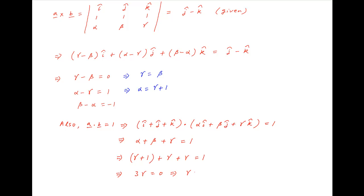Now, gamma is equal to beta, therefore beta is also equal to 0. Alpha is equal to gamma plus 1 and is therefore equal to 1.